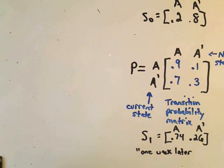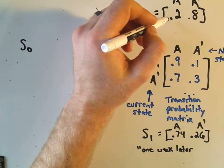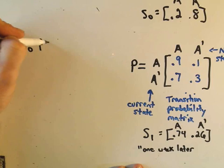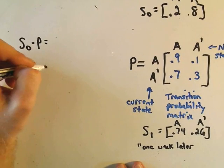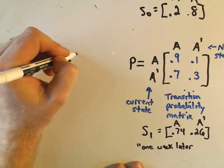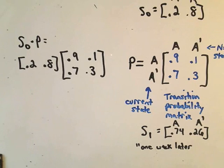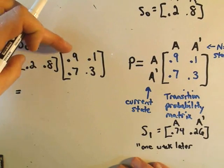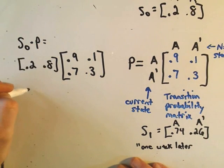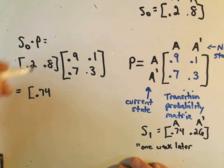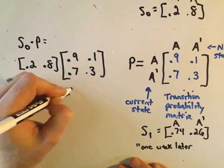Notice if we multiply our initial distribution matrix, 0.2, 0.8, times the probability matrix. So what that means is we would be multiplying 0.2 times 0.8, and then we would multiply that by the probability matrix, 0.9, 0.1, 0.7, 0.3. If you multiply this, remember again, matrix multiplication, we multiply rows by columns, we would get 0.2 times 0.9 plus 0.8 times 0.7, which is going to give us 0.74. And then if we take our first row times our second column, we're going to get 0.26.